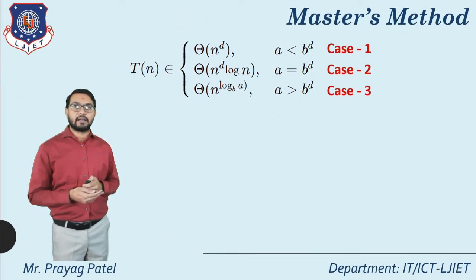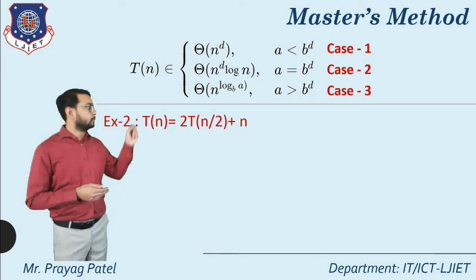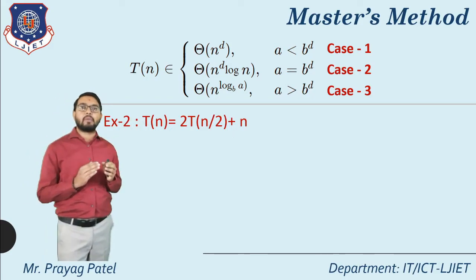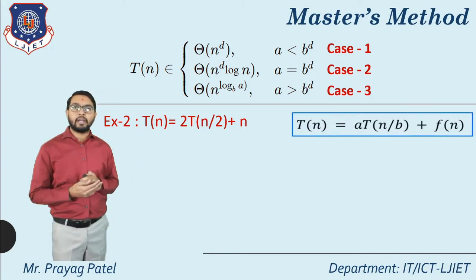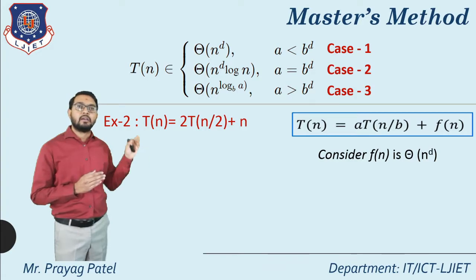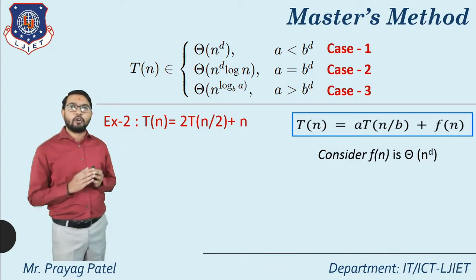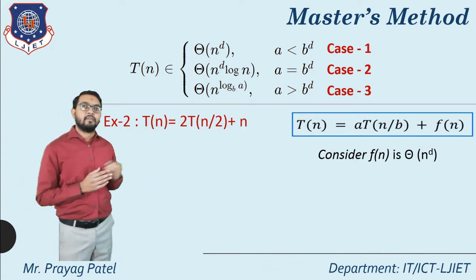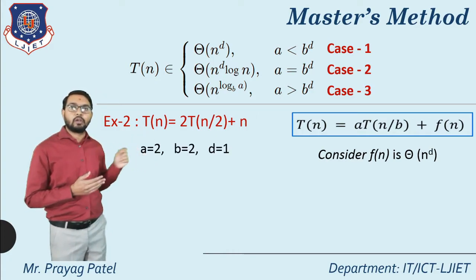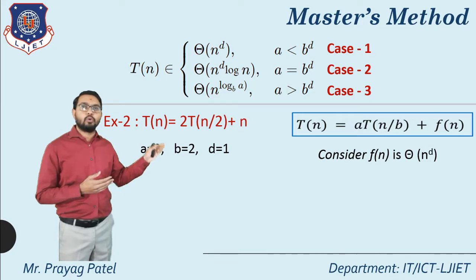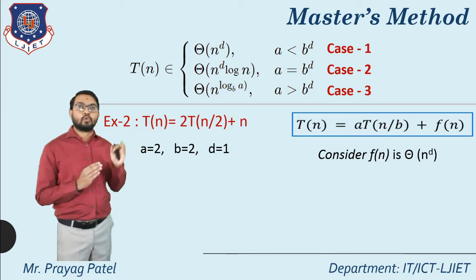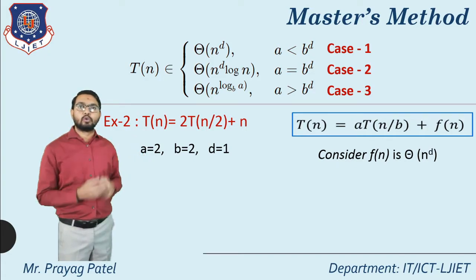Example 2: T(n) = 2T(n/2) + n. Comparing with the standard form, a = 2, b = 2, and since f(n) = n = n^1, d = 1. Now compare a with b^d: a = 2 and b^d = 2^1 = 2.